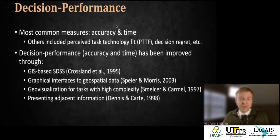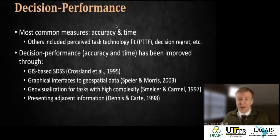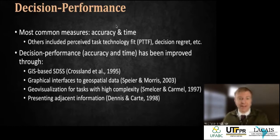How do we measure decision performance? The most common measures are accuracy — was the answer correct? — and time — how long did it take? There are also measures of fit, and regret — did you feel like you made the wrong decision? Studies have shown we can predict and modify decision making time and accuracy based on various components: individual characteristics, task characteristics, and problem complexity.